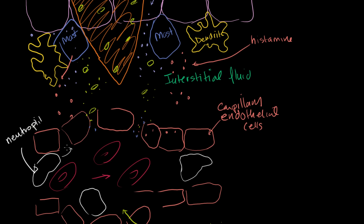That's called marginization. They roll along this wall and eventually, so they kind of stick to the wall. They adhere to the wall. And then eventually, they squeeze through these gaps in the capillary wall. This is called diapodesis or extravasation. Sometimes it's called emigration. These are all fancy words. But essentially, it's just squeezing through the wall. So that's the neutrophil right there.